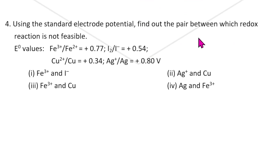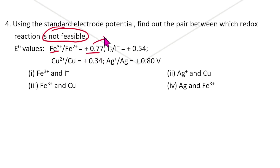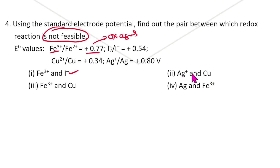Using the standard reduction potential, find out the pair between which the reaction is not feasible. Not feasible means the reaction generally won't go. This can act as an oxidizing agent and can oxidize the other species, so that reaction is possible. Then Ag⁺ and Cu: Ag⁺ can oxidize Cu to Cu²⁺, acting as oxidizing agent — this reaction is also possible.